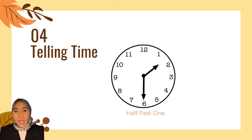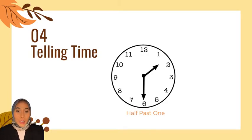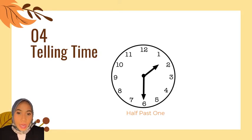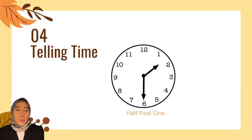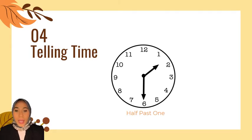Next, we're talking about half past. We say half past when the long hand points at six and the short hand is placed between two numbers. The example is shown on the screen — we say it is half past one.